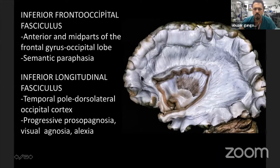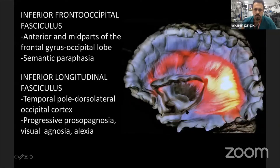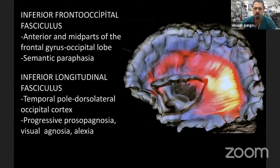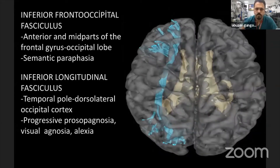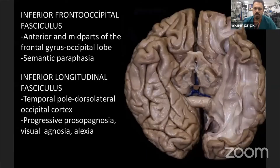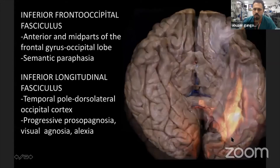The inferior frontal occipital fasciculus connects the frontal lobe to the occipital lobe and to the insula. Under the temporal lobe lies the inferior longitudinal fasciculus. From the inferior view, you can see the inferior longitudinal fasciculus located lateral to the ventricle.